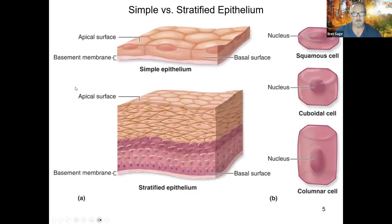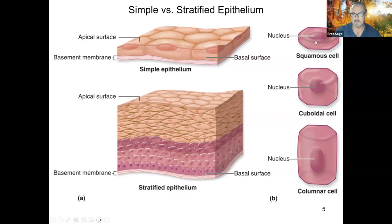This image shows the difference between simple versus stratified epithelium. Simple is one layer attached to a basal basement membrane. Stratified means many different layers. The image also shows different cell shapes: squamous is flat — think of a fried egg. Cuboidal is somewhat round in cross-section, like a cube. And columnar is rectangular, like a column.